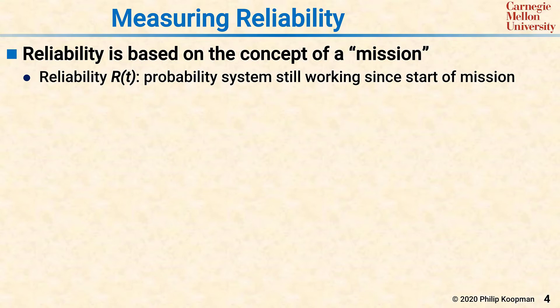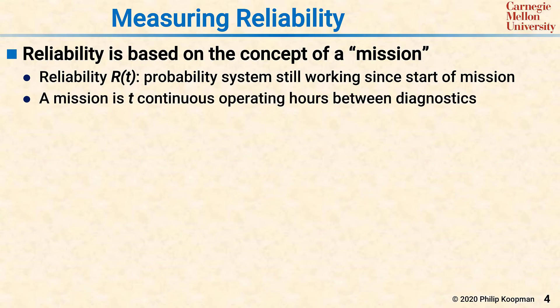The reliability R(t) is the reliability at time t. The idea of a mission can be illustrated by an airplane taking off from an airport with a 12-hour flight plan. In that situation, t is 12 hours, and R(t) is the probability that the aircraft will complete that 12-hour mission without having to abort the flight.